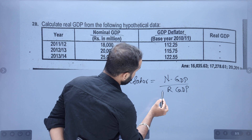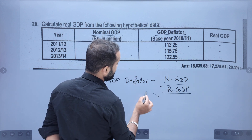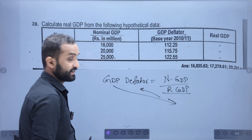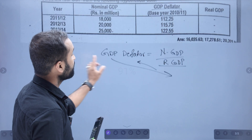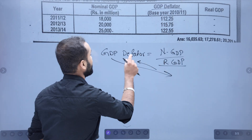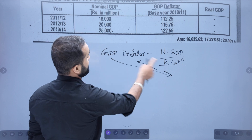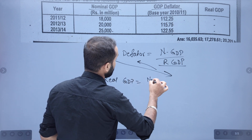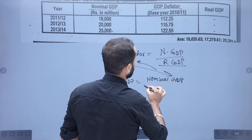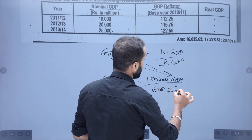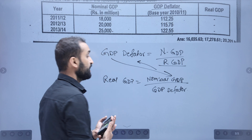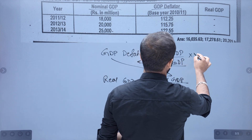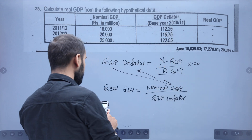Now, from this formula we can derive the real GDP. Real GDP is equal to nominal GDP divided by GDP deflator, multiplied by 100. Nominal GDP divided by GDP deflator gives us the real GDP.